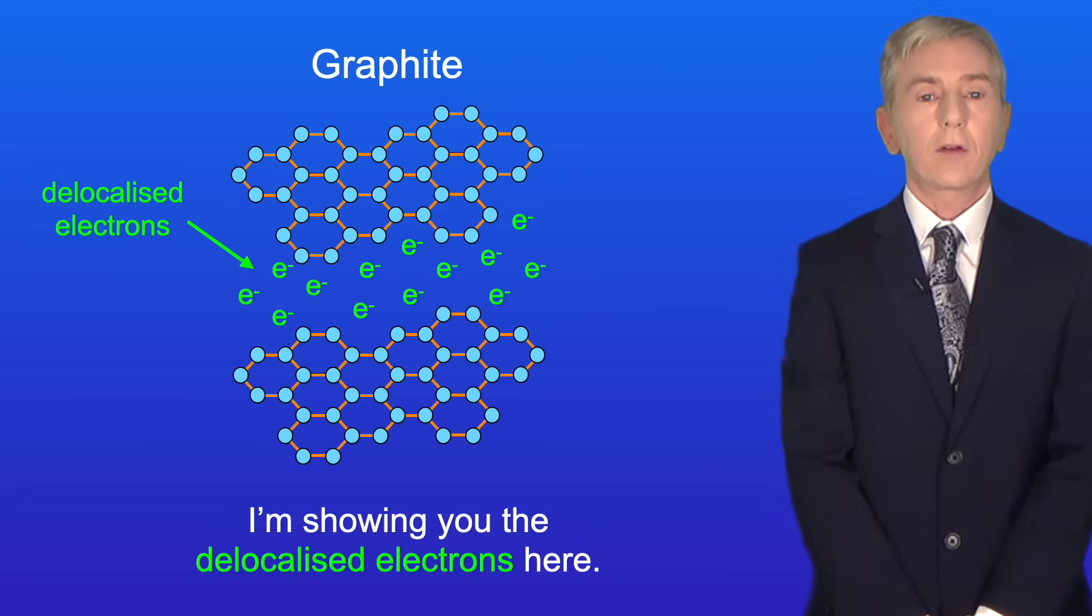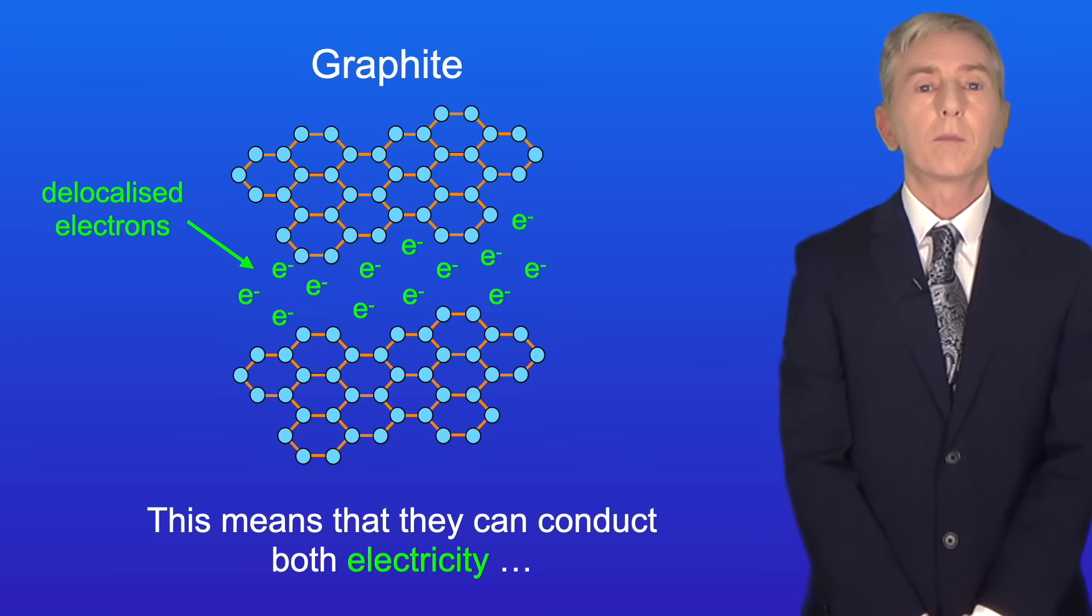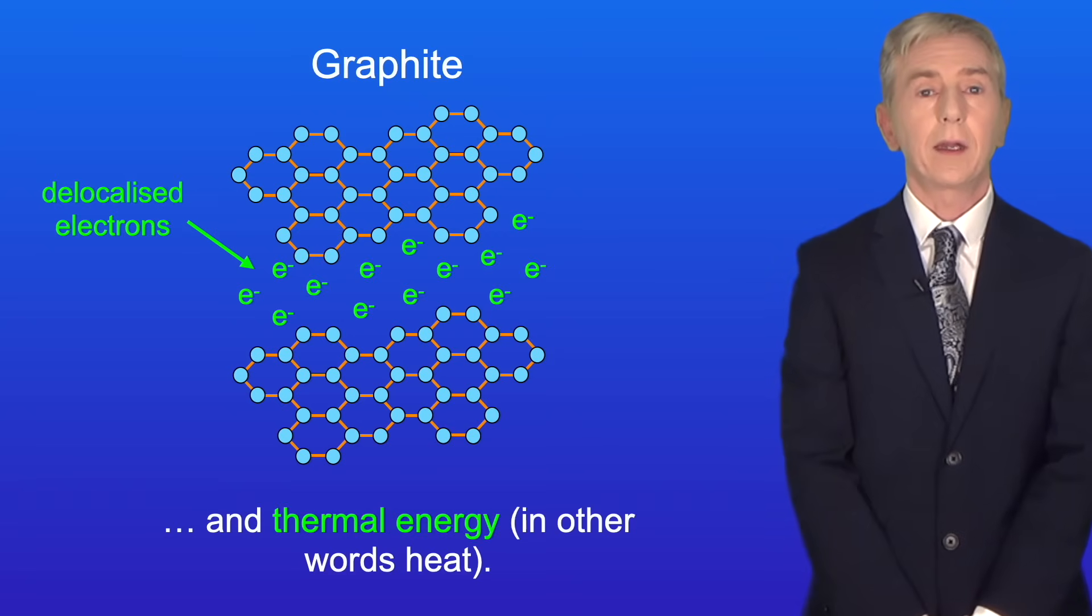I'm showing the delocalized electrons here. Now the key fact is that these delocalized electrons can move. This means that they can conduct both electricity and thermal energy, in other words heat.